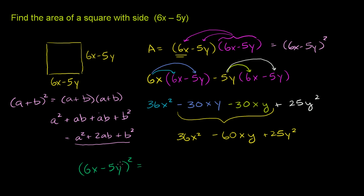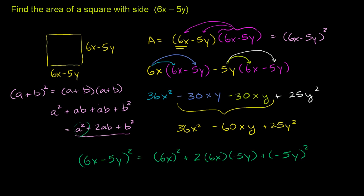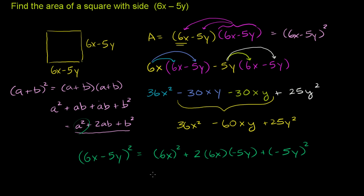So let's do it that way as well. So if we have 6x minus 5y squared, we could just say, well, this is going to be a squared. It's going to be a squared, which in this case is 6x squared, plus 2ab. So that's plus 2 times a, which is 6x, times b, which is negative 5y, plus b squared, which is plus negative 5y, everything squared.